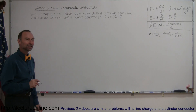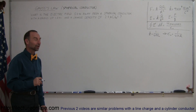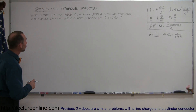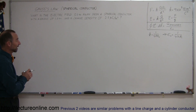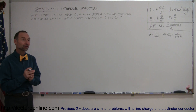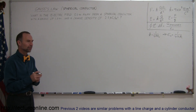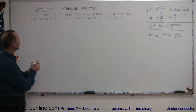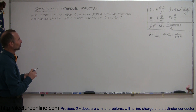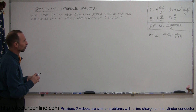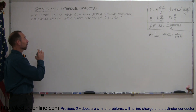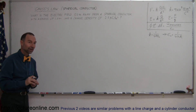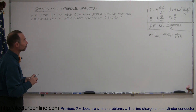Welcome to iLecture Online. Here's another example of how to utilize Gauss's law to find the strength of an electric field near a charged object — in this case, a spherical conductor that has a radius of 1 meter and a charge density of 2.5 microcoulombs per square meter, and the point of interest is 5 meters away from the sphere.